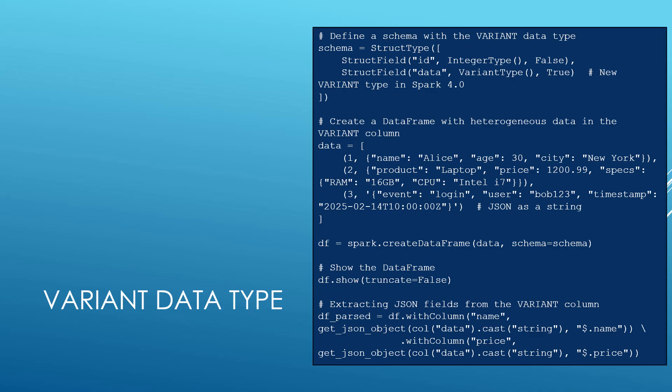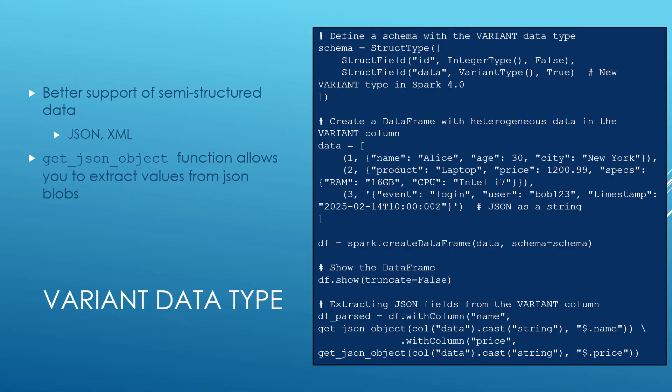Also new in Spark 4 is the variant data type, made for better support of semi-structured data. We have a lot of unstructured data in data lakes from JSON or XML sources, and this makes it easier to wrangle that within Apache Spark. There's now a getJSONObject function to extract data from JSON blobs. In the example, you can see a variant column containing JSON-style data with an ID and random structured fields in curly brackets — the kind of unstructured data you'd expect in a data lake. Using the variant data type, you can extract specific bits with getJSONObject.